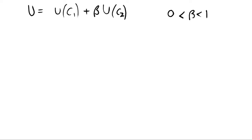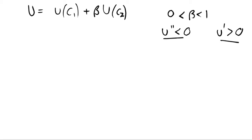We make some restrictions about our utility function: it's strictly concave, which means the second derivative is negative, and we also assume the first derivative is positive. So if we increase consumption in either period one or period two, we increase utility, but at a decreasing rate — we have diminishing returns to consumption. So we are strictly concave, and now we can set up the consumer problem.